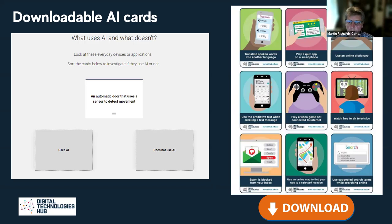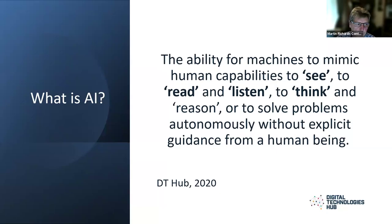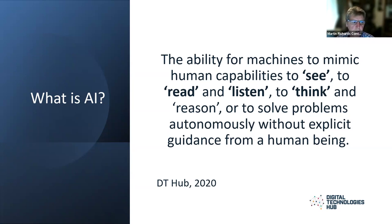Our focus is really looking at AI as a context for learning and how we weave that into the underpinning concepts of digital technologies. It's important, when introducing AI, to come up with a definition students can grasp. We've gone for 'the ability of machines to mimic human capabilities' — to see, to read, to think and listen, and to reason, solving problems without human guidance. That is really what AI is all about: mimicking those human capabilities.